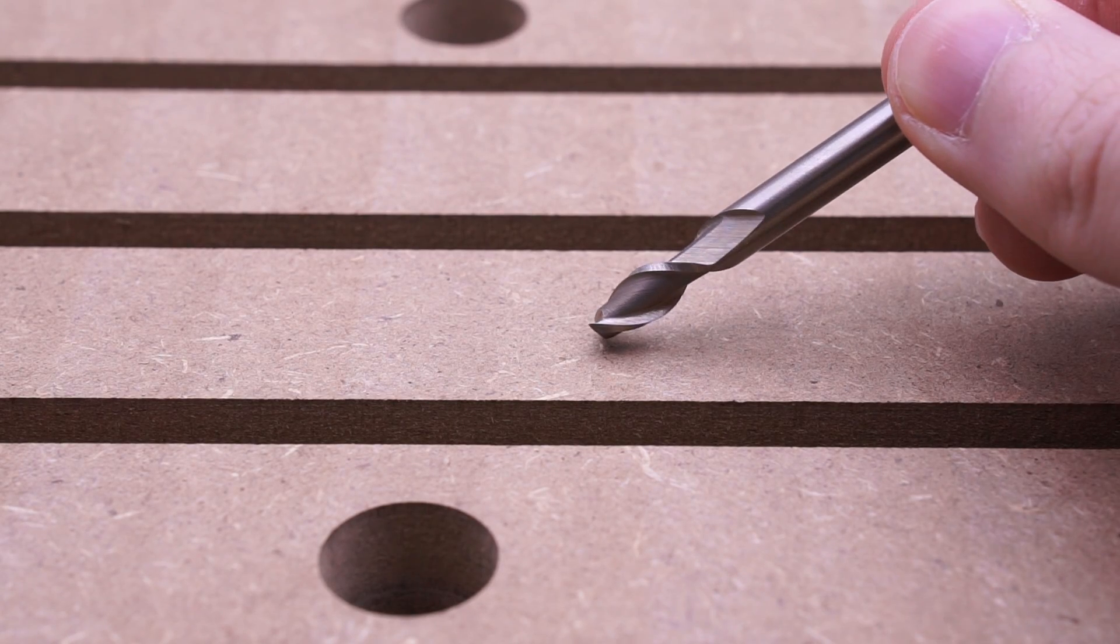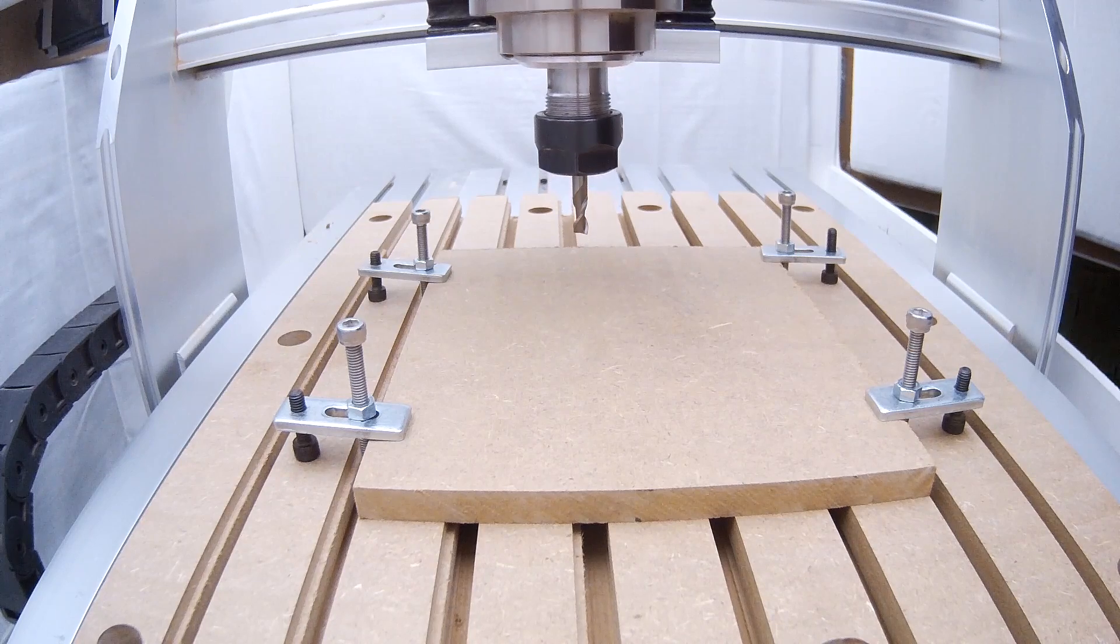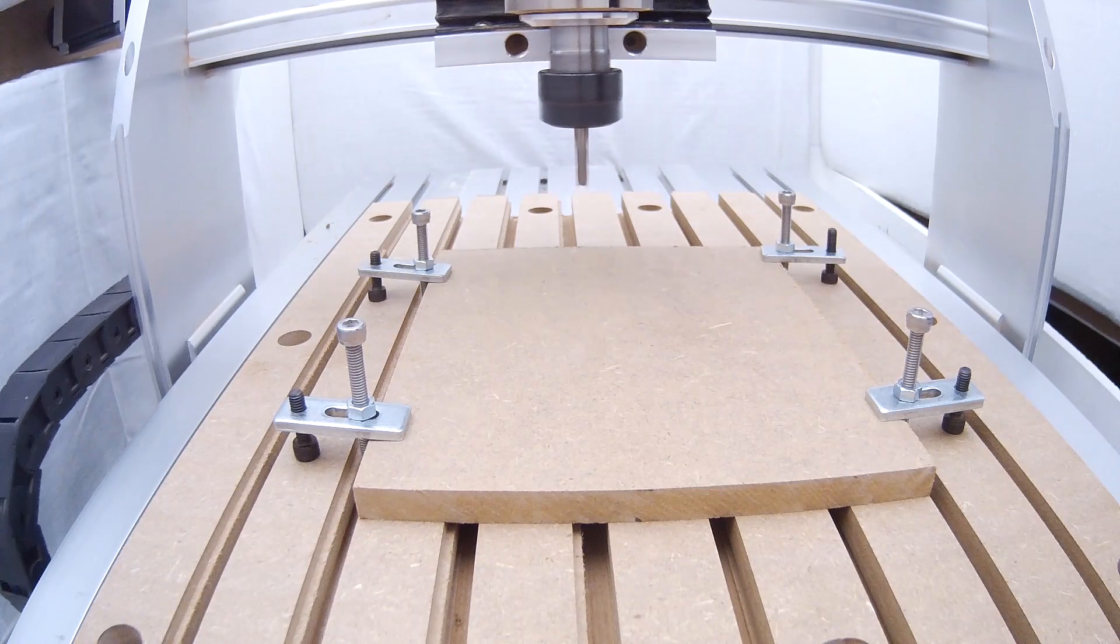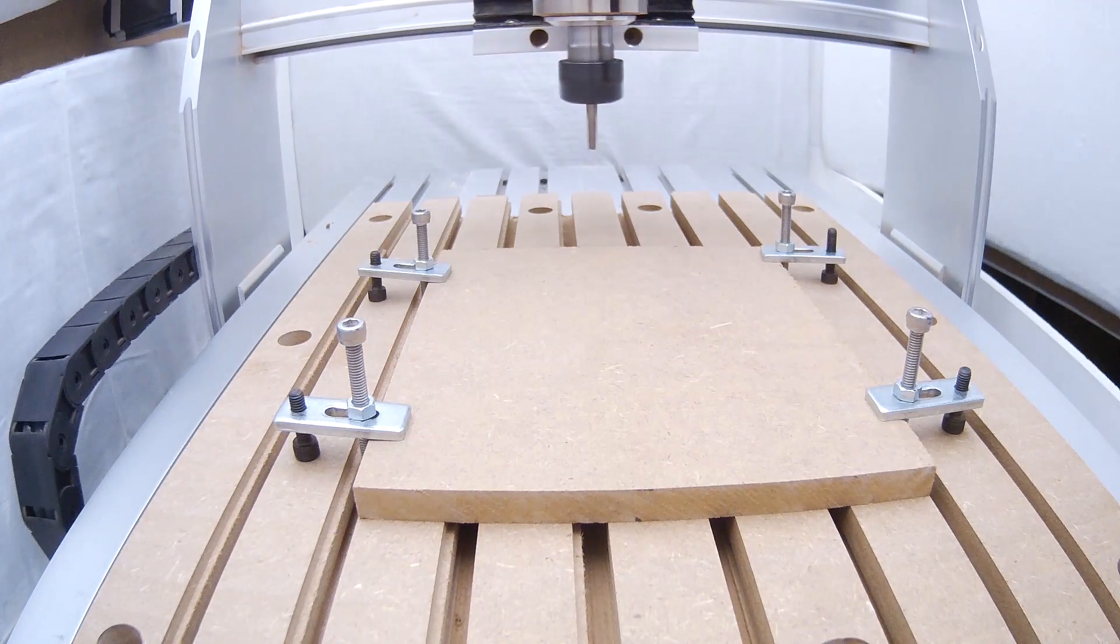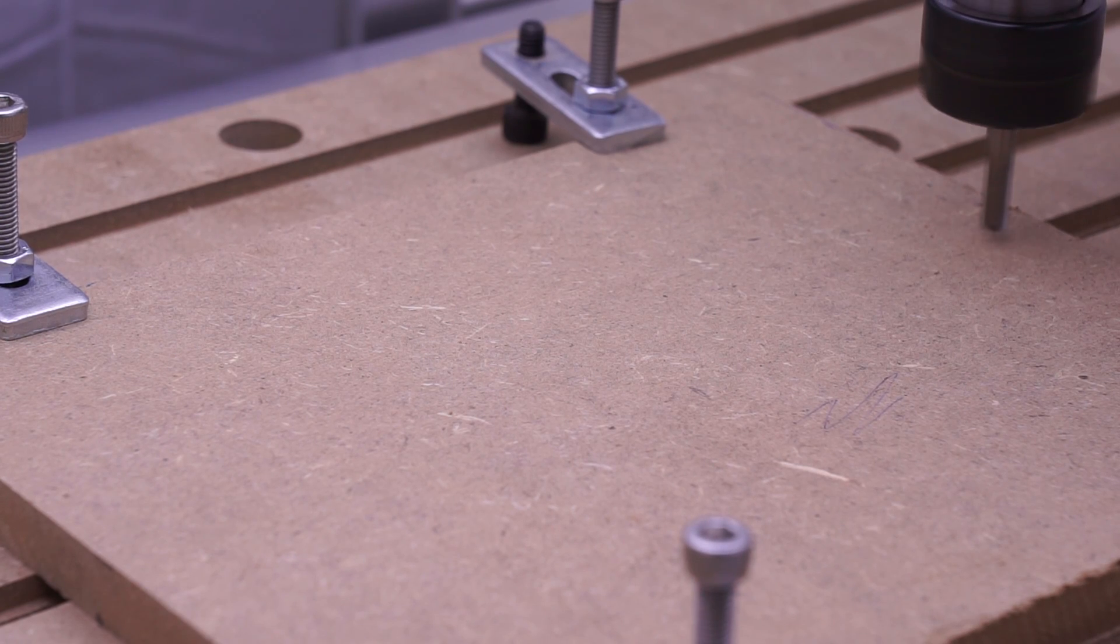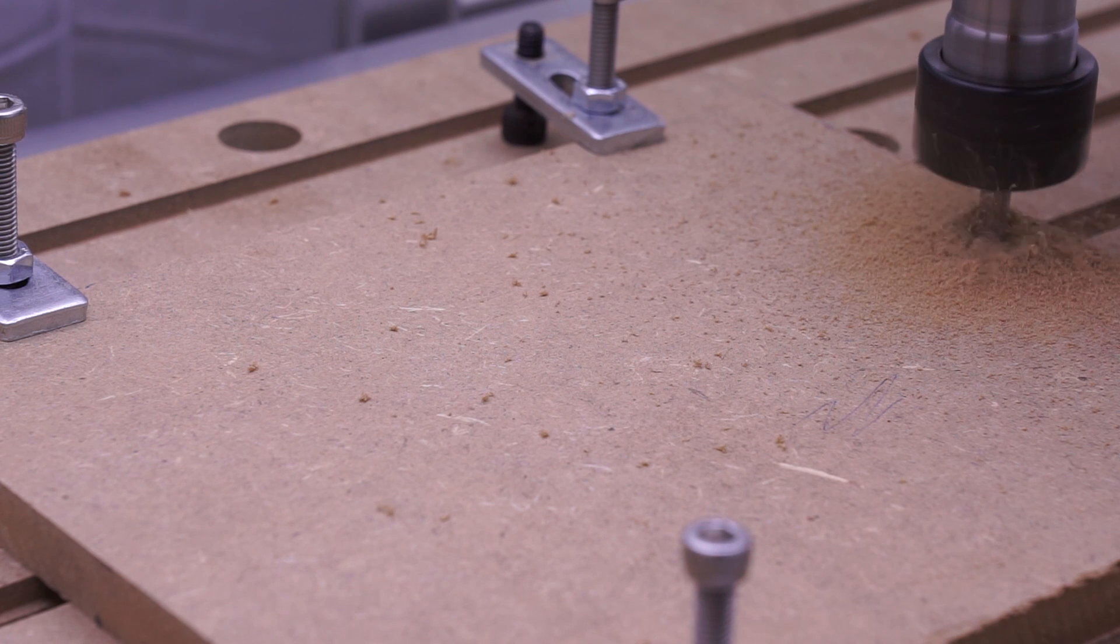I am starting out with a 6mm 2-flute high-speed steel end mill. First, I am milling a 7mm hole in the back, which is just big enough to fit a 6mm T-nut.